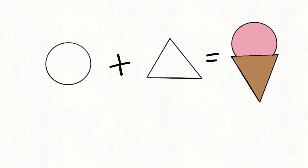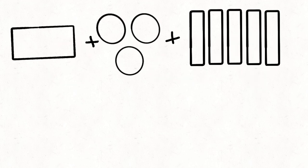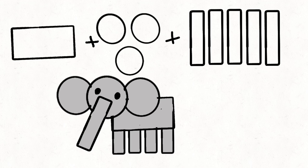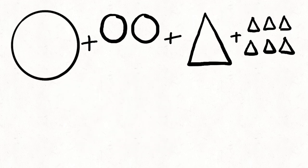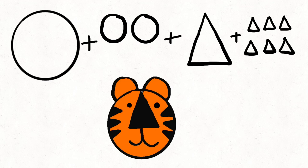A circle and a triangle, you can make an ice cream cone. I bet you won't guess what you can make out of these shapes. Are you ready? An elephant. All right, time for one last one. All these shapes together, they make a tiger.